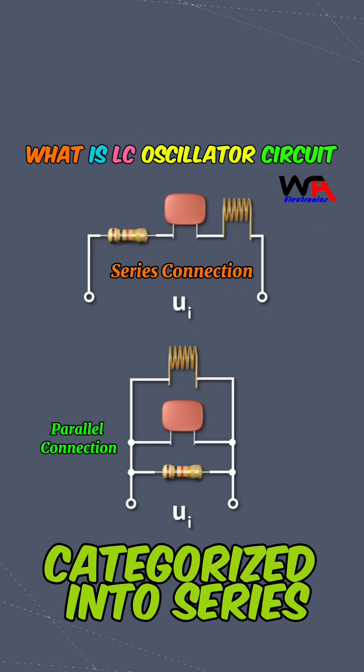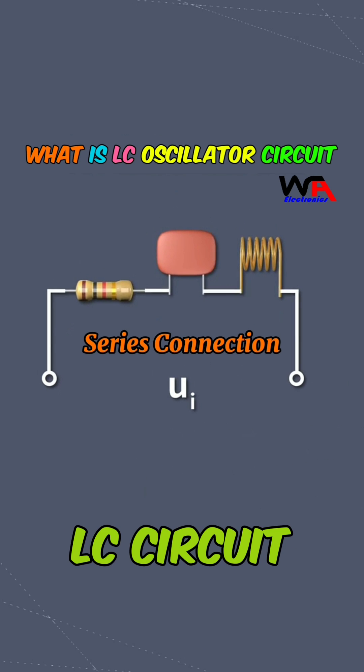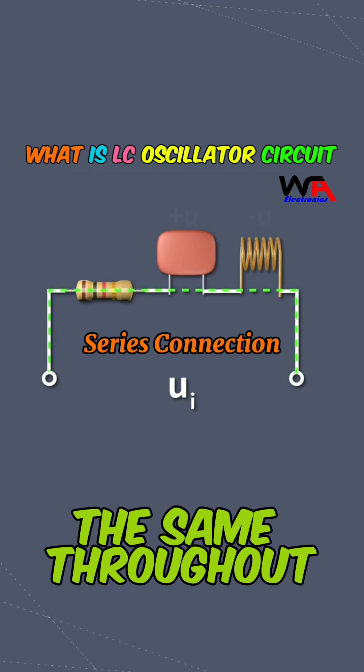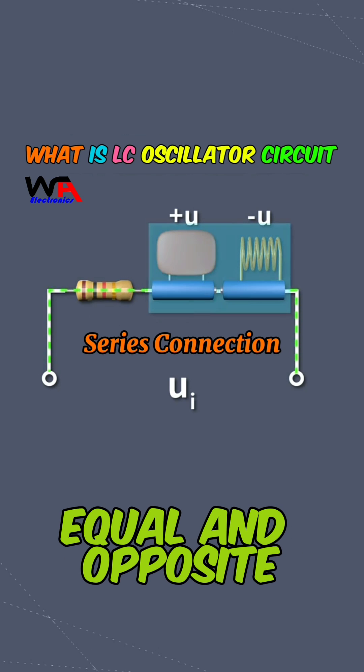LC oscillations can be categorized into series and parallel configurations. In a series LC circuit, the current is the same throughout, but the voltages across the inductor and capacitor are equal and opposite.